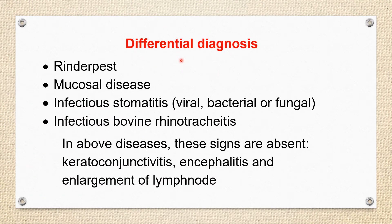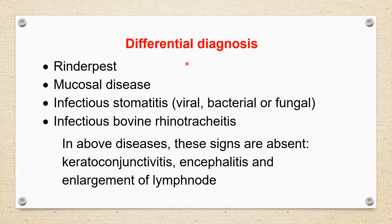We discuss here the differential diagnosis. There are a large number of diseases that need to be differentiated from this disease, because a variety of symptoms are observed here. Rinderpest, mucosal disease, infectious stomatitis — viral stomatitis, bacterial stomatitis, fungal stomatitis — and infectious bovine rhinotracheitis have some similar symptoms with Malignant Catarrhal Fever. But in all these diseases, certain signs are absent.